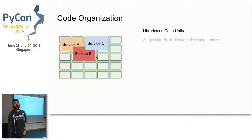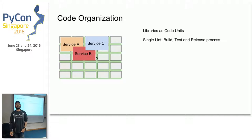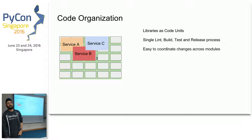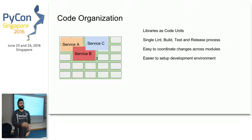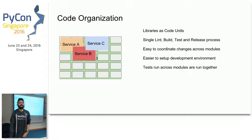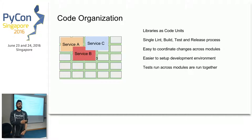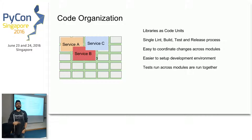When you think of libraries as units of code, there are lots of benefits. You get a single lint, build, test, and release process baked into the repository. It's easy to coordinate changes across multiple modules. It's easier to set up development environments because all the toolchain is present inside one repository. And if you change one shared library, it will automatically run the tests for all the services using that library.